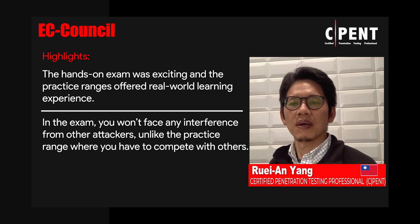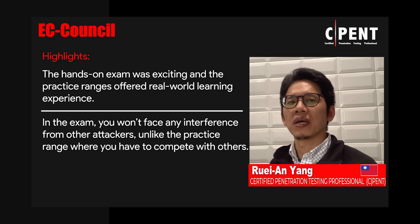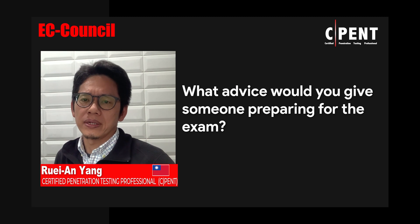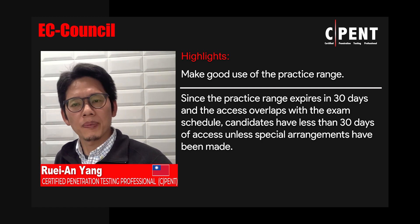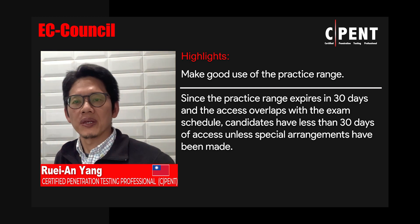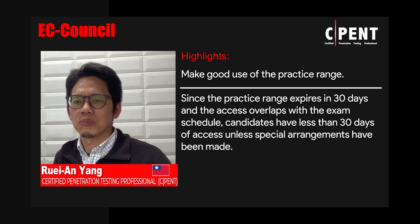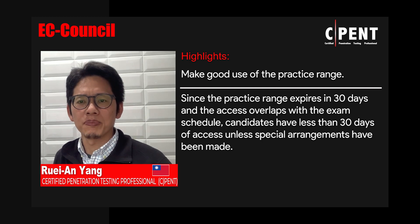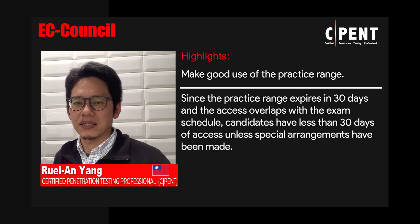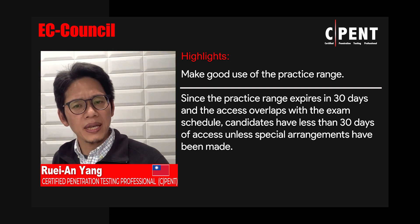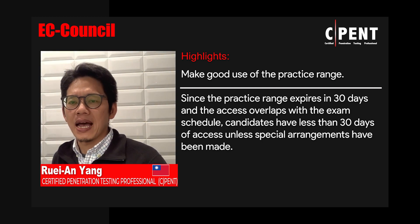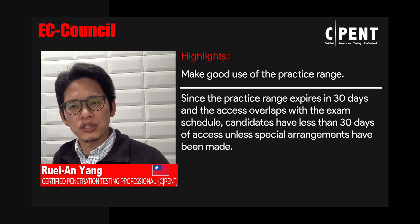In the practice range, participants have to compete with others who are eager to gain access by all means and all methods. After sharing my experience in the CPENT program, I would like to offer some advice for people who are preparing to take the CPENT exam. First of all, optimize practice resources. Use the lab, practice range, and two-section exam option strategy. Make good use of the lab to be familiar with test topics and tools before the practice range. Since the practice range expires in 30 days and the access overlaps the exam schedule, most exam takers have less than 30 days of access unless special arrangements were made.